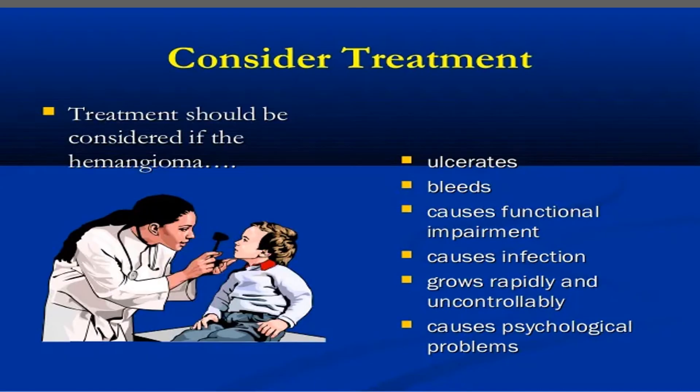Treatment of hemangioma should be considered when it is ulcerated, bleeding, causing functional impairment, infection, rapid uncontrolled growth, or psychological problems. Otherwise, we do not treat all hemangiomas.